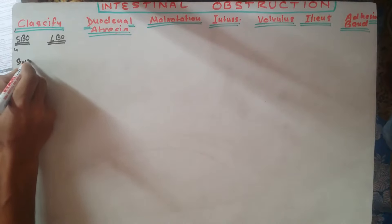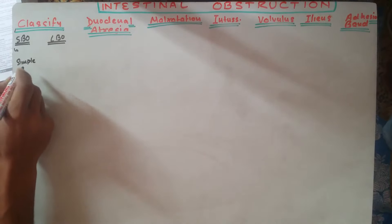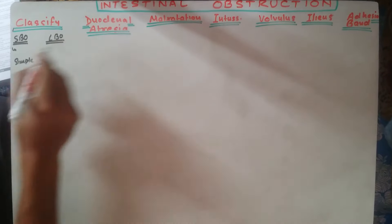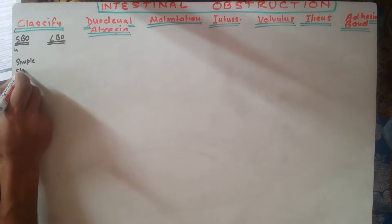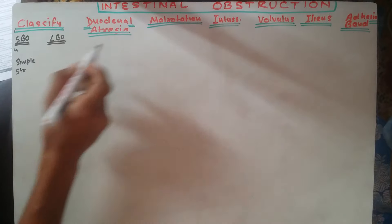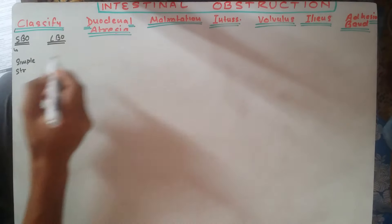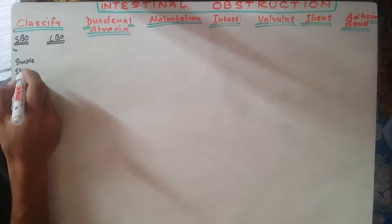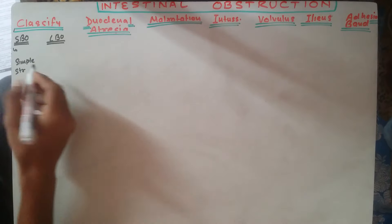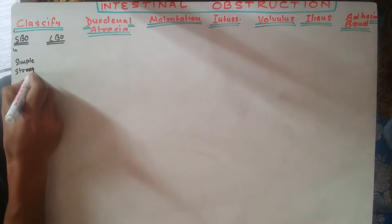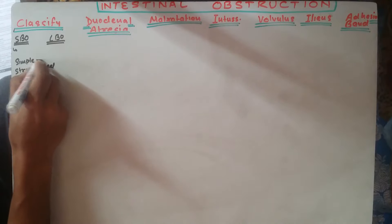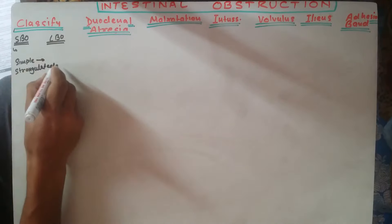Another classification is simple or strangulated. Simple means there is no vascular compromise due to obstruction, whereas in strangulated, due to the obstruction, the vascular supply to the gut will be diminished or obstructed, resulting in ischemia. So it can be either a simple or strangulated type related to vascular compromise.